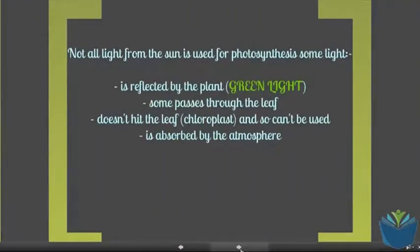An issue with the energy transfer from here is that the sun produces a huge amount of energy and so not all of that energy is consumed in photosynthesis. Some of the reasons for that include: some of the light is reflected by the plant. Plants usually appear green and so what they are doing is they are reflecting the green light. They are not using green light to photosynthesize with.